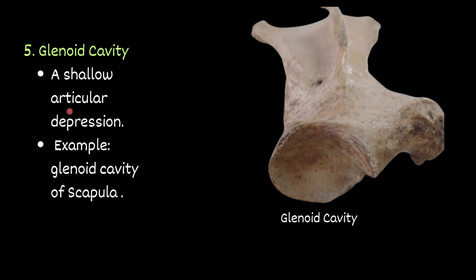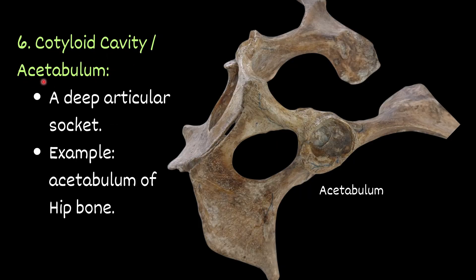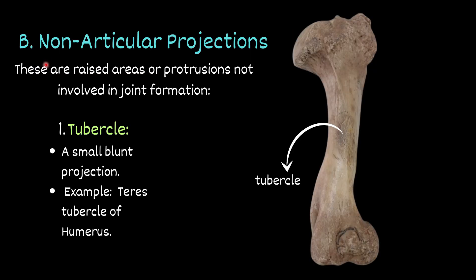Then glenoid cavity — a shallow, not very deep articular depression. Example: glenoid cavity of the scapula. You can see this whole structure — this is called the glenoid cavity of the scapula. Then cotyloid cavity or acetabulum — a deep articular socket. For example, acetabulum of the hip bone. This is the acetabulum; it articulates with the head of the femur to form the hip joint.